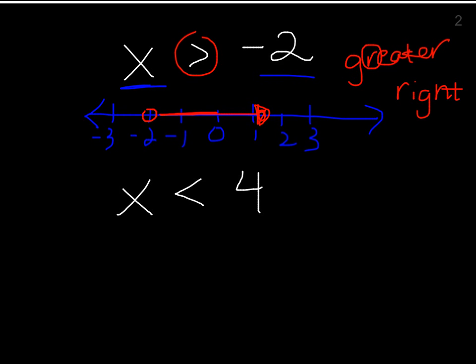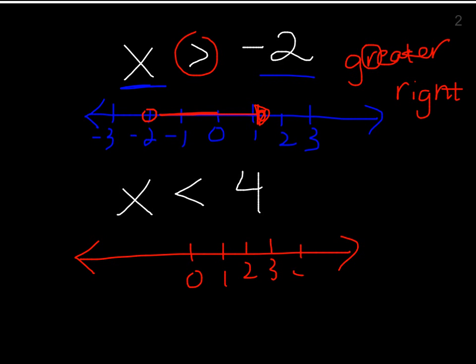Looking at the next one: x is less than 4. Again, draw the number line with 0, then mark 1, 2, 3, 4, 5 going one direction and negative 1, negative 2, negative 3 going the other.